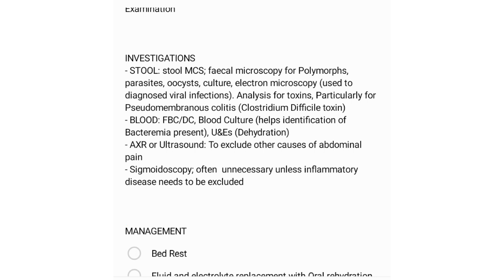Stool analysis for toxins is done particularly for pseudomembranous colitis, caused by Clostridium difficile toxins. Blood investigations include a full blood count and blood culture to identify bacteremia. Urea and electrolytes should be done especially when dehydration is present. An abdominal X-ray or ultrasound can exclude other causes of abdominal pain. Sigmoidoscopy is not often necessary unless inflammatory bowel disease needs to be excluded.